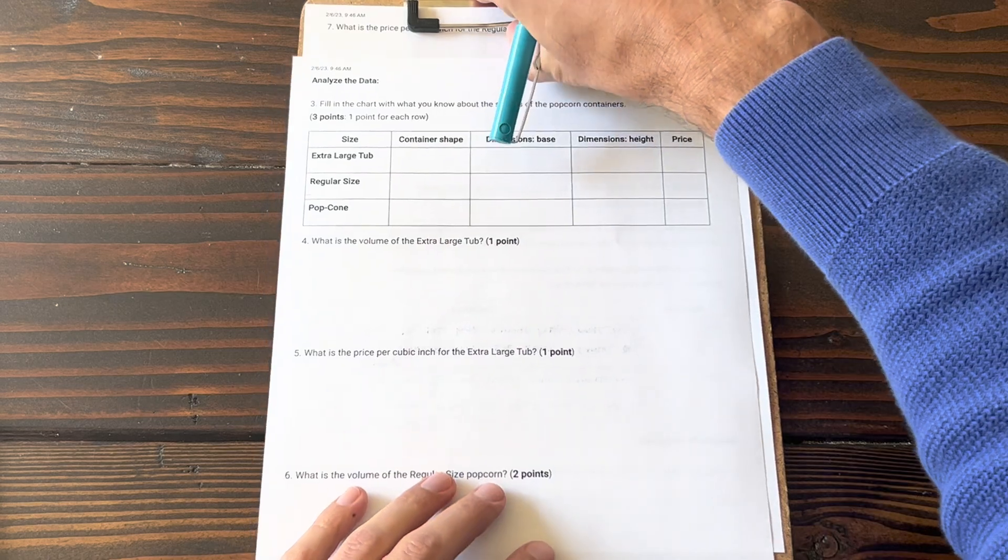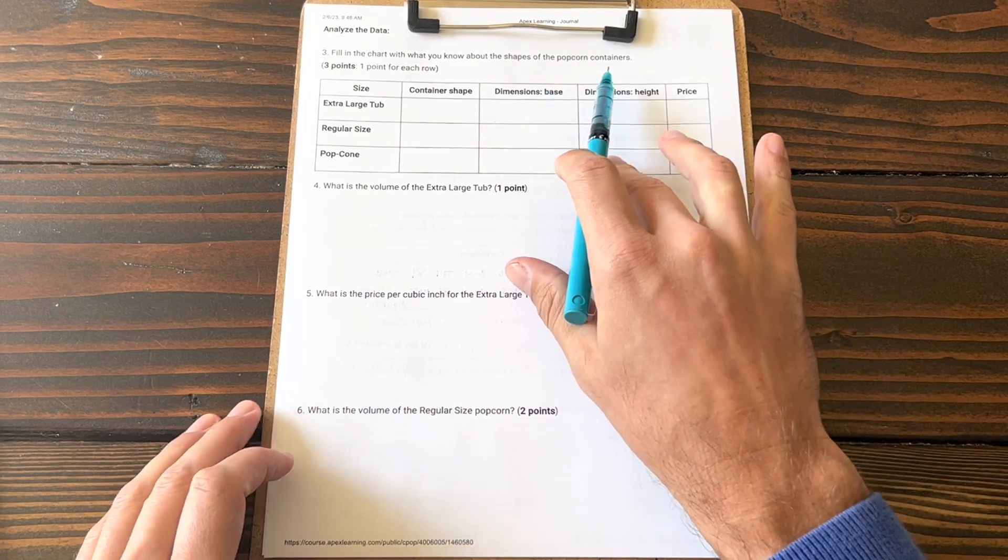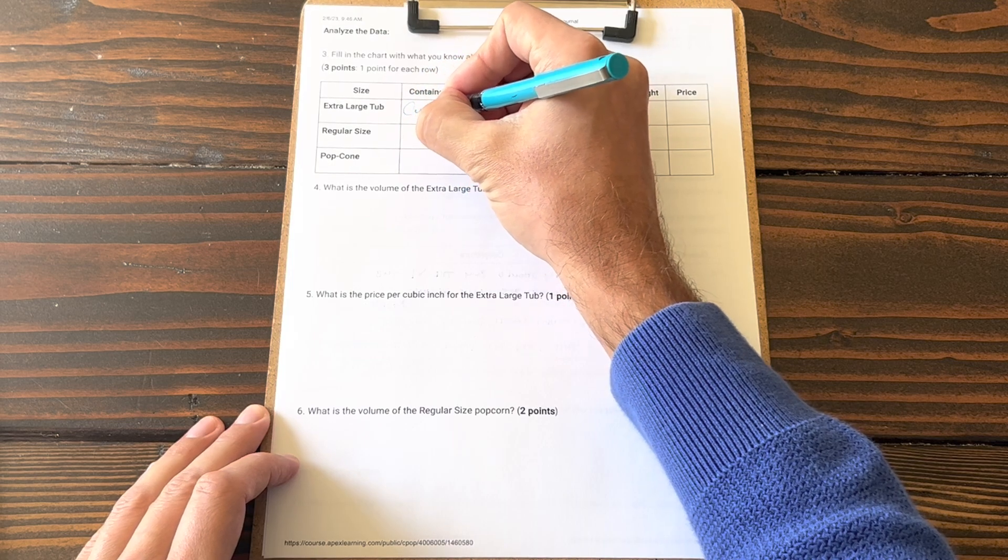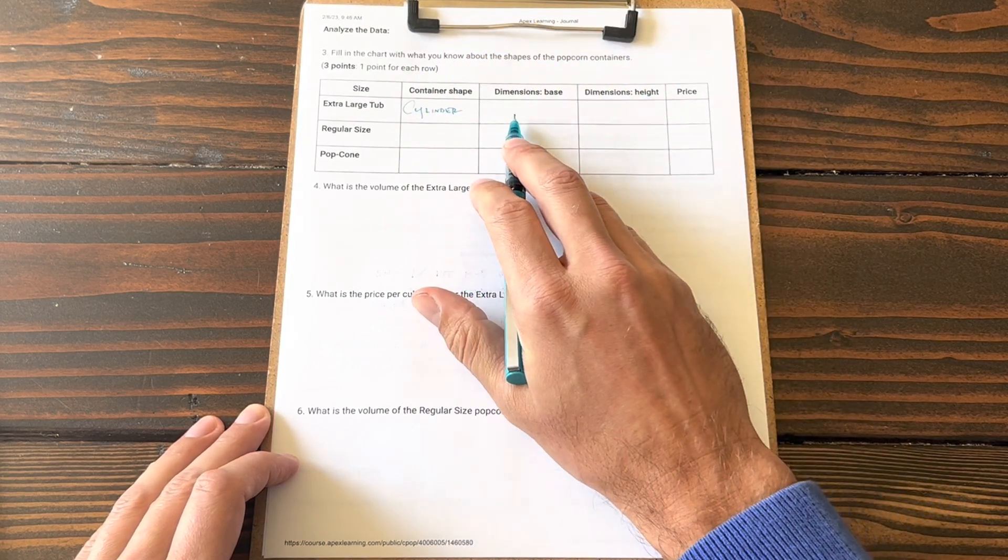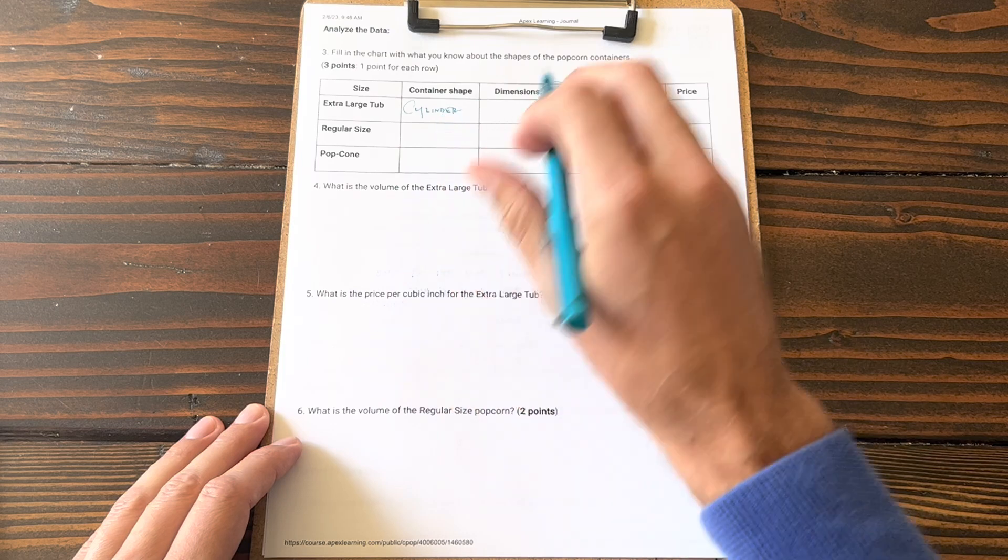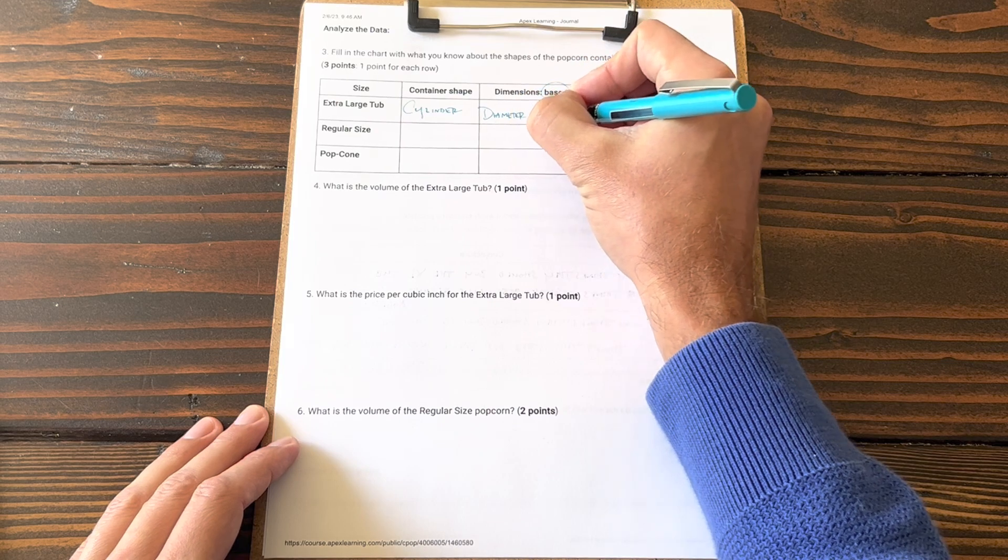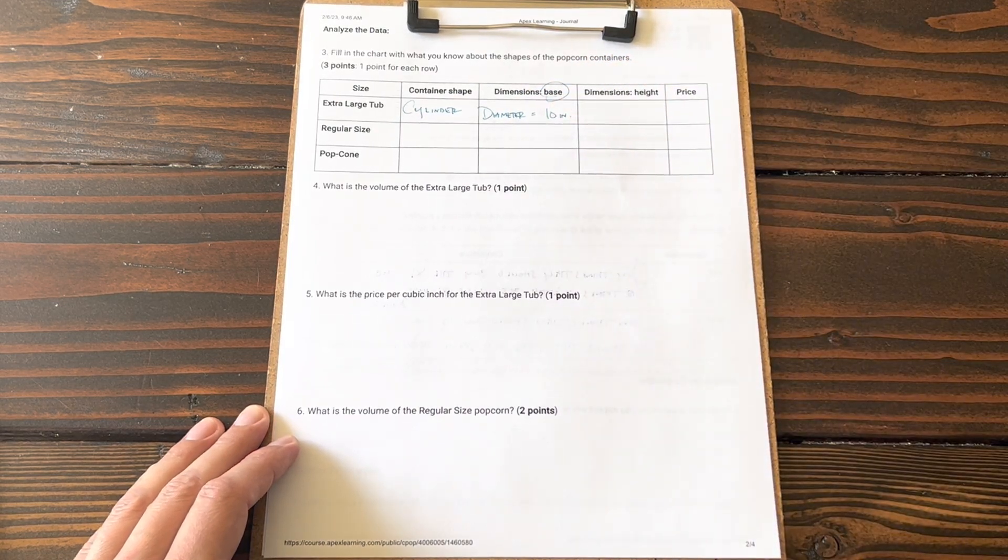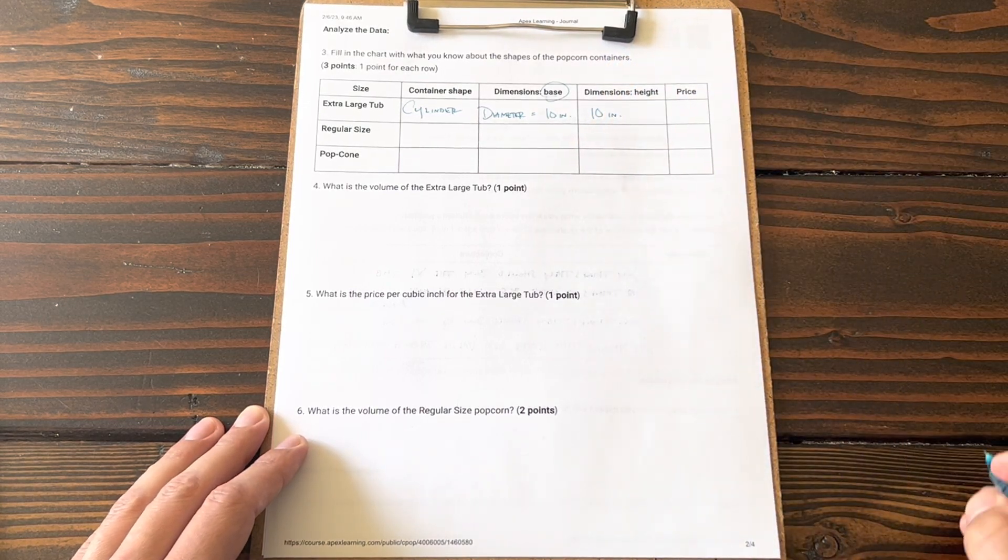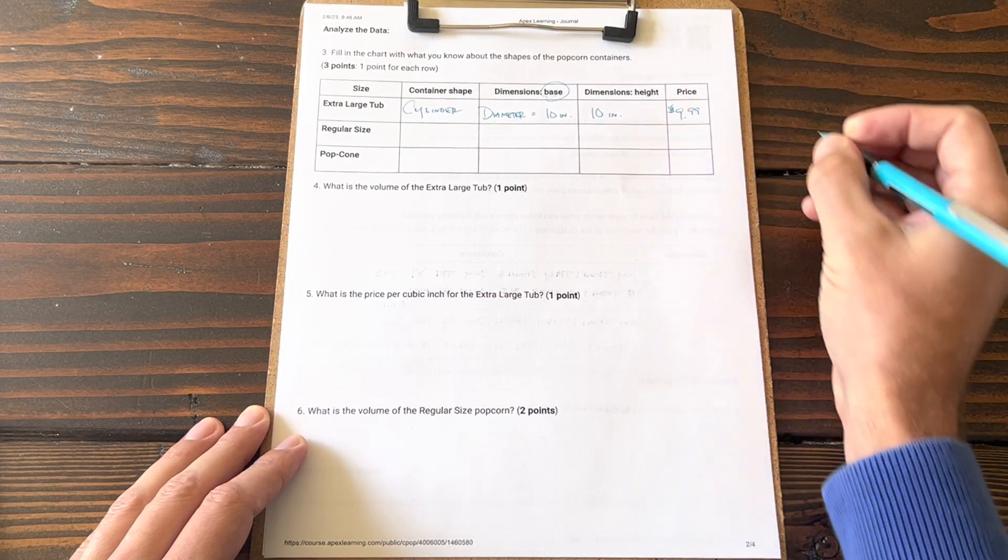Fill in the chart with what you know about the shapes of the popcorn containers. The extra large tub: this shape is a cylinder. The dimensions of the base—the base is going to be a circular base because it's a cylinder—and we know that the diameter is 10 inches. This information comes from the video. The height of the cylinder we know is also 10 inches. The price of this tub of popcorn is $9.99, pulling all this from the video.